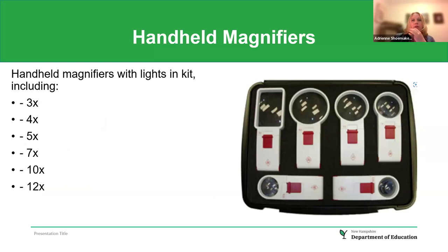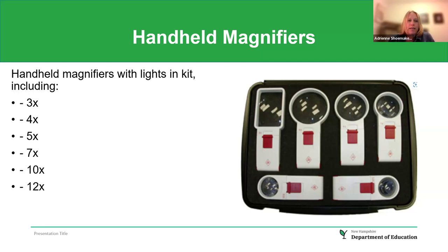Moving into some mid-tech items: a handheld magnifier kit is available through AT&NH and can be borrowed. The kit comes with magnifiers that have lights, with different power levels ranging from 3x up to 12x.